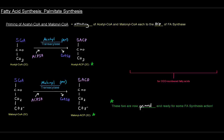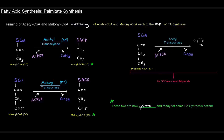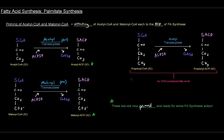As a side note, this priming doesn't have to occur with acetyl-CoA and malonyl-CoA. For odd-numbered fatty acids, instead of acetyl-CoA we can use propionyl-CoA, which is a three-carbon molecule — you'll recall propionyl-CoA from beta-oxidation of odd-numbered fatty acids. If we started with propionyl-CoA and malonyl-CoA, we'd get propionyl-ACP and malonyl-ACP, and the condensation reaction would join a three-carbon molecule with a two-carbon molecule to give a five-carbon starting molecule, rather than the four-carbon molecule we get here.